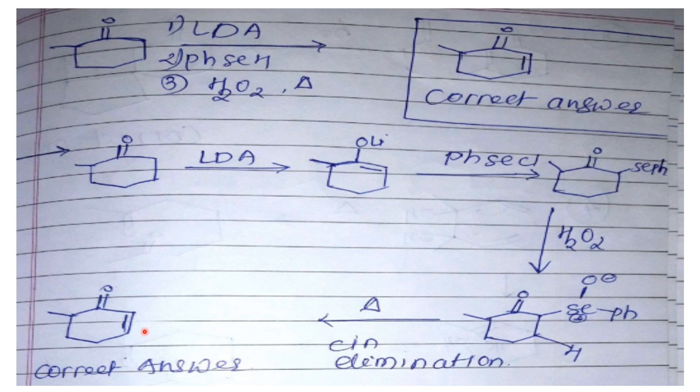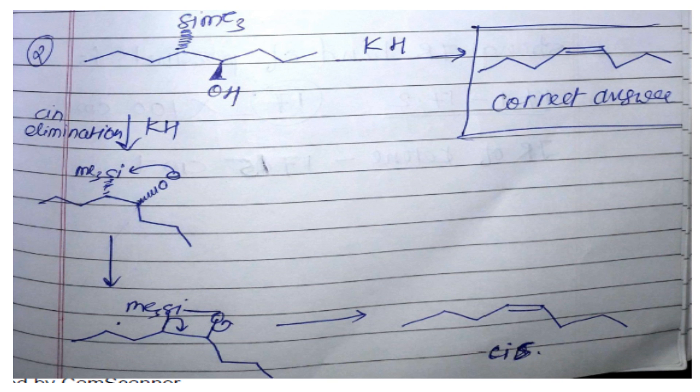Now I'll move towards the next. You can see this is a Peterson olefination where they have given base. We know that base gives some selectivity. In Peterson olefination, in presence of acid, trans elimination will be there, and in presence of base, syn elimination will be there. Now these both groups are trans to each other, so whenever we are going to have base elimination, we have to rotate these bonds to get cis.